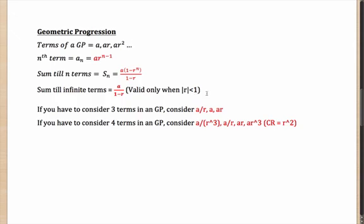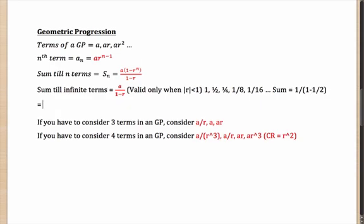The sum till n terms of a GP is A × (1 − rⁿ) / (1 − r). For infinite terms, the sum is A / (1 − r), valid only if r < 1. For example, the series 1, 1/2, 1/4, 1/8, 1/16 has common ratio 1/2, and its infinite sum is 1 ÷ (1 − 1/2) = 1 ÷ (1/2) = 2.